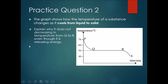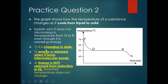The first step: once again, you need to say it is changing state — it is changing from liquid to solid, it is currently freezing. When it is changing state, it cannot change in temperature. That explains the horizontal line.